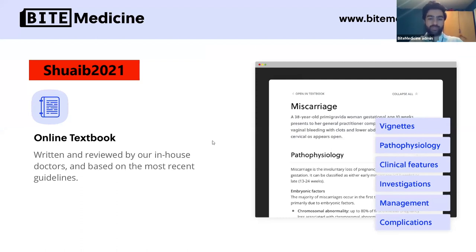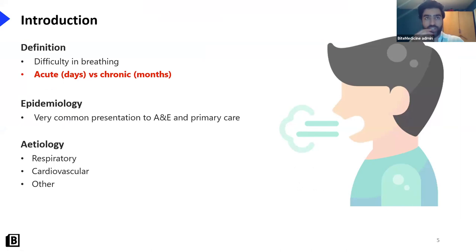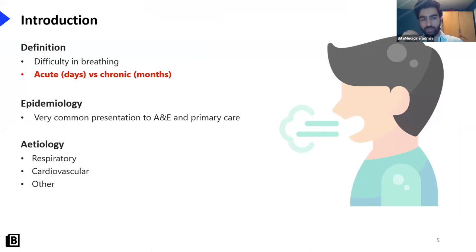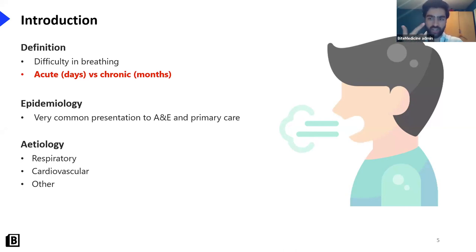Let's get started. Shortness of breath — what is it? It's difficulty in breathing, fast breathing. The key thing to distinguish is whether it's acute or chronic, because that will help guide your diagnosis. If it's acute we're talking days, and if it's chronic we're talking months — different diagnoses will cause different time scales. Shortness of breath is a very common presentation to A&E and primary care, so you need to know this inside out. The causes are respiratory, cardiovascular — those are the two main ones — and then a bunch of other conditions.